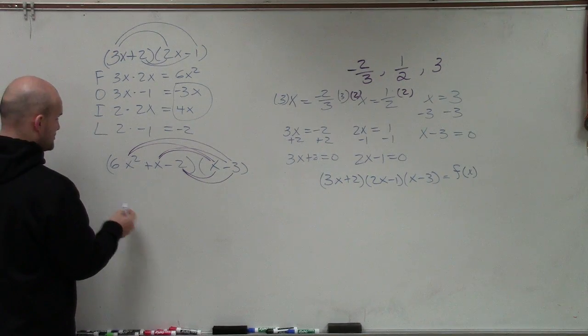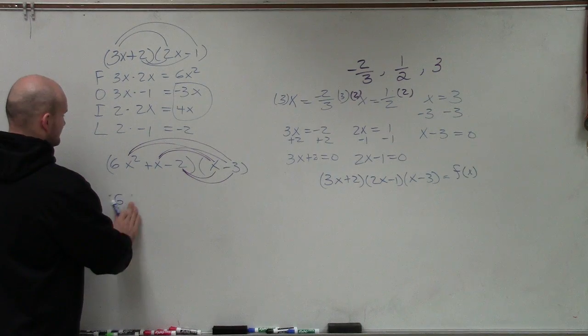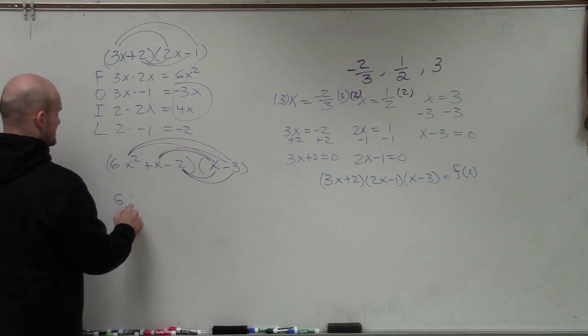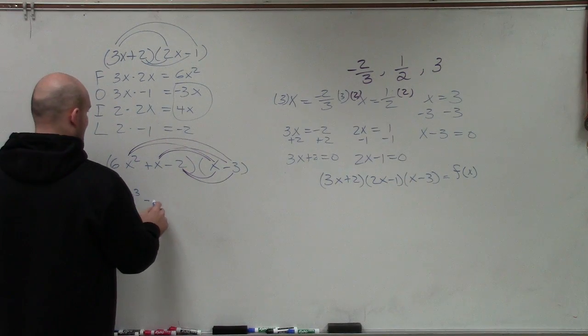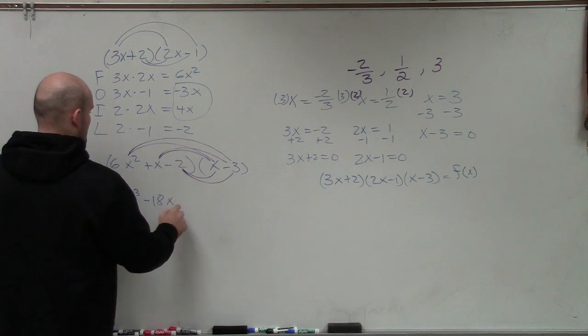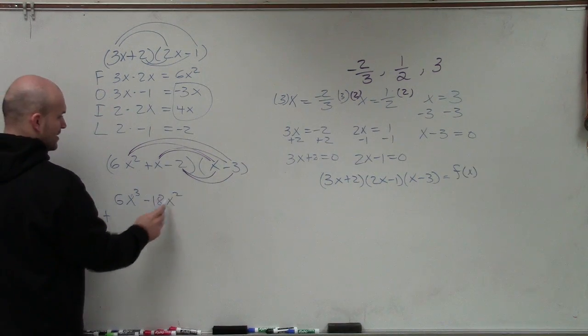So 6x squared, and actually I'll use the vertical method. So 6x squared times x, 6x squared times x is 6x cubed. 6x squared times negative 3 is going to be a negative 18x squared. Plus, next row, x times x is x squared.